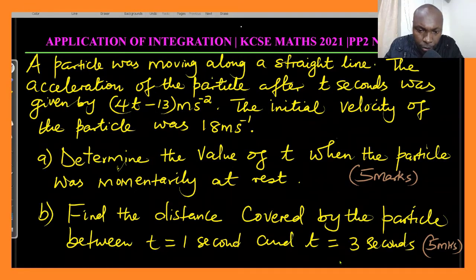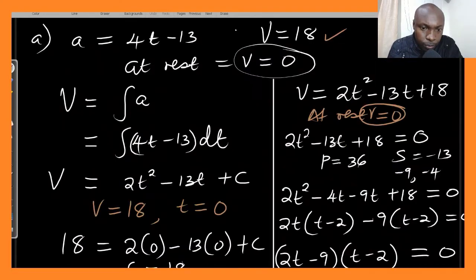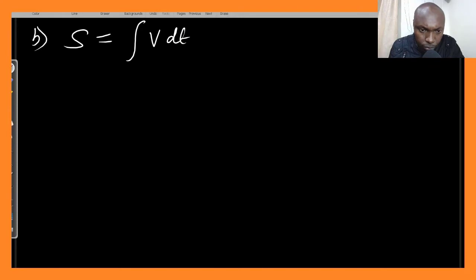Part b: find the distance covered by the particle between t = 1 second and t = 3 seconds. To find the distance covered, we use the equation for velocity. To get the distance or displacement s, we integrate the velocity with respect to t.